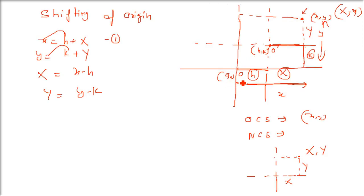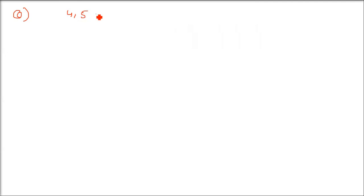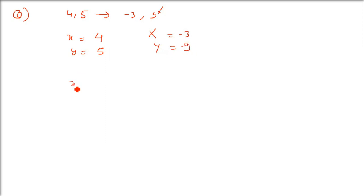At what point is the origin shifted if the coordinates of a point (4,5) become (minus 3, 9)? So origin is (0,0) — where should it be shifted? The point (4,5) was small x, small y, and capital X and capital Y become minus 3 and 9. That is, 4 and 5 are small x and small y with respect to the initial origin. Now it has to become minus 3 and 9, that is capital X and capital Y. So what is h and k?